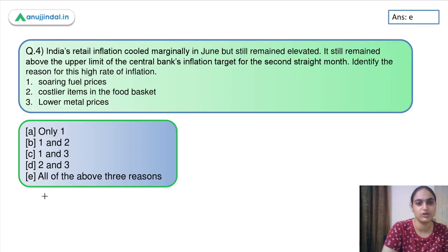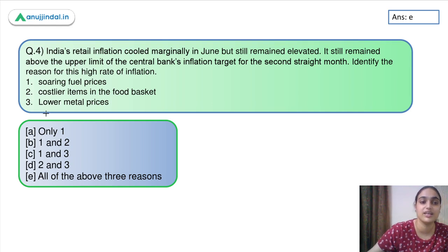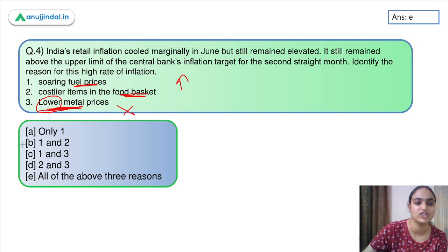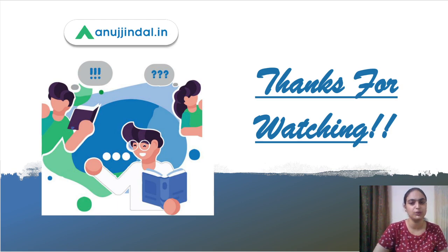Moving to the last question: India's retail inflation cooled marginally in June but remained elevated, still above the upper limit of the central bank's target for the second straight month. Identify the reasons for this high rate of inflation. The answer is option B — soaring fuel prices and costly items in the food basket. This was all for today's session. I hope it was useful. Thank you so much.